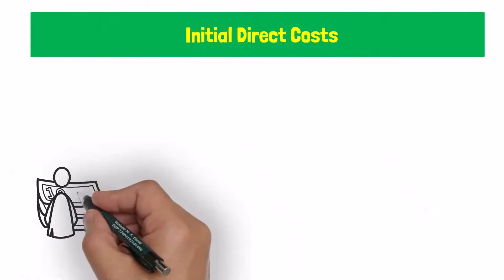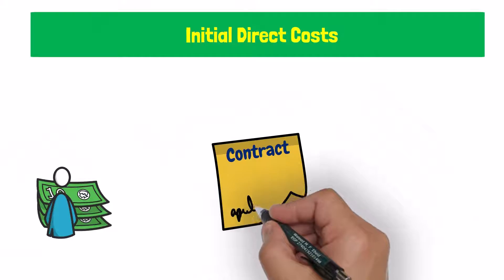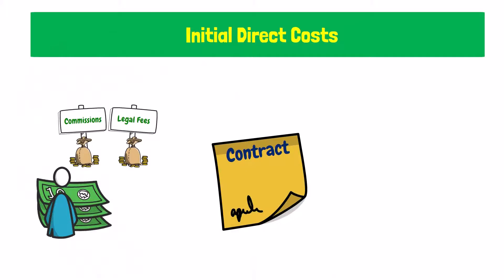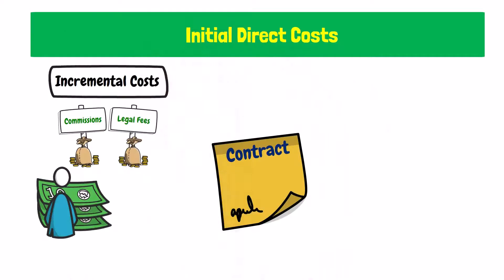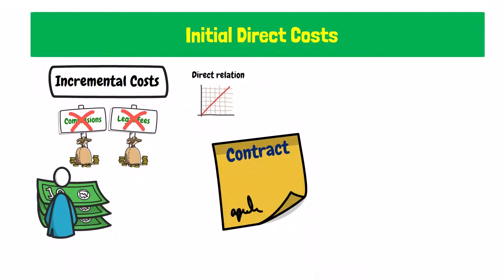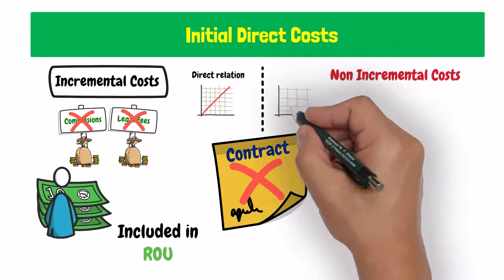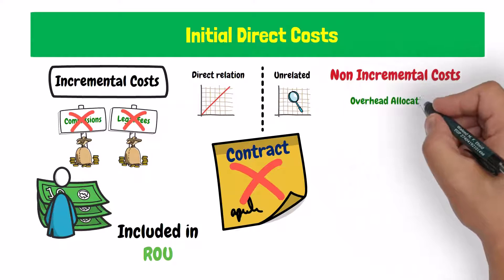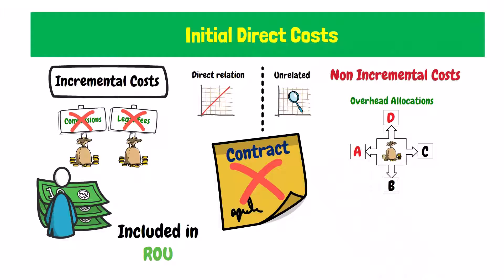The fourth component is any initial direct costs incurred by the lessee to obtain the lease, like for example commissions and legal fees. These costs are incremental costs, which means that they are directly related to obtaining the lease agreement. The lessee would not have incurred these costs if the lease had not been obtained. Costs that are not directly related to obtaining the lease arrangement, like overhead allocations, are not incremental costs, and therefore are ignored when measuring the right of use asset.